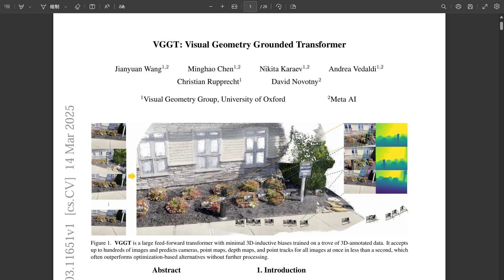Okay, let's kick things off. Imagine trying to build a 3D model of, say, a room just from a bunch of photos you took. It sounds simple, maybe, but it's actually an incredible challenge. Absolutely. Traditionally, you're looking at some really complex geometric calculations step by step. You find matching points, figure out camera angles, build a sparse model, then refine it.